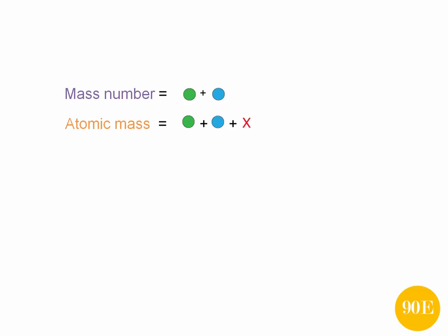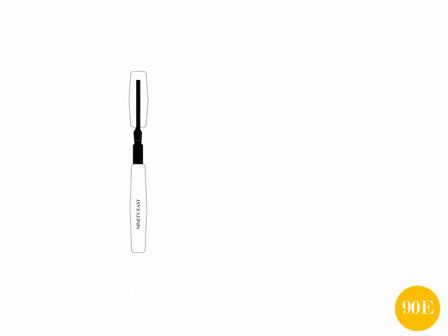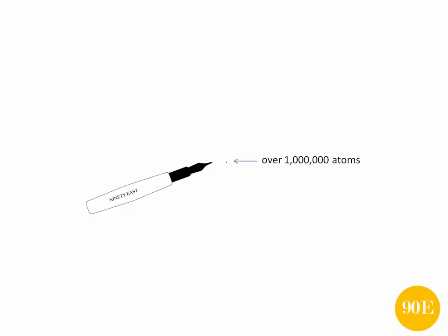What you'll probably also remember from our previous videos is that atoms are really small, but it can be hard to imagine exactly how small. If you were to take a pen and put it to paper and draw a dot, have a think about exactly how many atoms you might think would be in that single dot. If you've guessed anywhere over a million atoms, then you're absolutely correct.